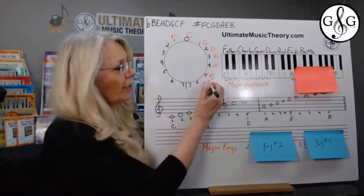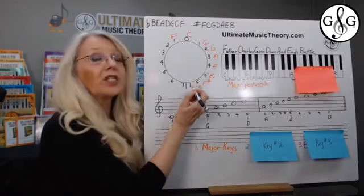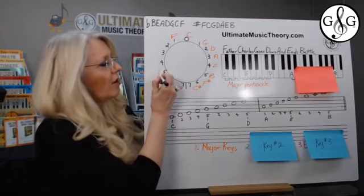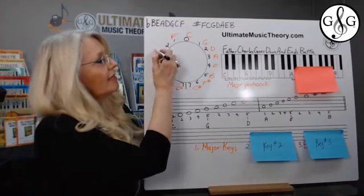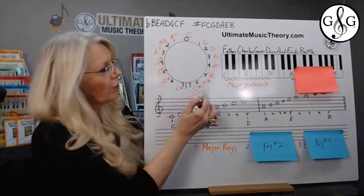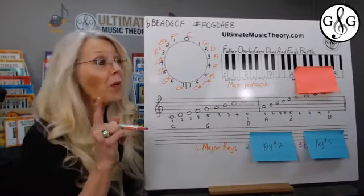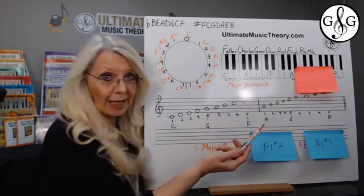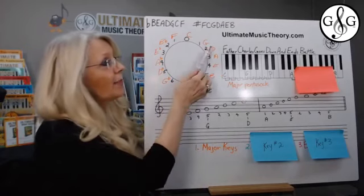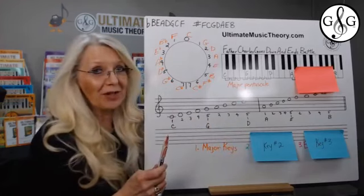Now what? We used our sentence — well, here's the cool thing. We simply use the same sentence again, continuing around the outside of the circle. So now we go Father sharp, Charles sharp. When we cross the line, we repeat C but we're changing to the flat keys. So Charles flat, goes flat, down flat, and flat, ends flat, battle flat. So now you can see 'battle ends and down goes Charles' father' — we can say the same sentence forwards or backwards. So number one: learn the major pentascale pattern — F, G, A, B, C; C, D, E, F, G; G, A, B, C, D — and so on. That creates the major keys on the outside of the circle of fifths.